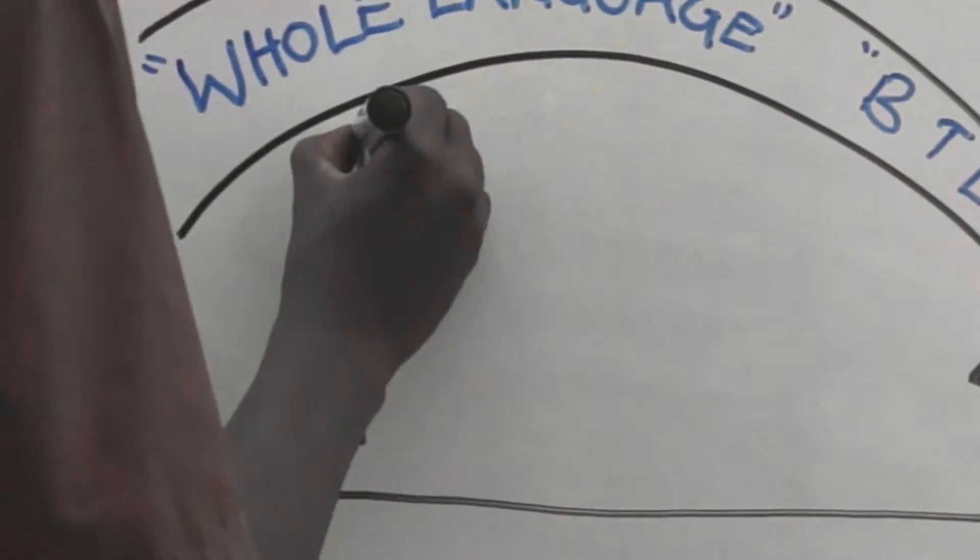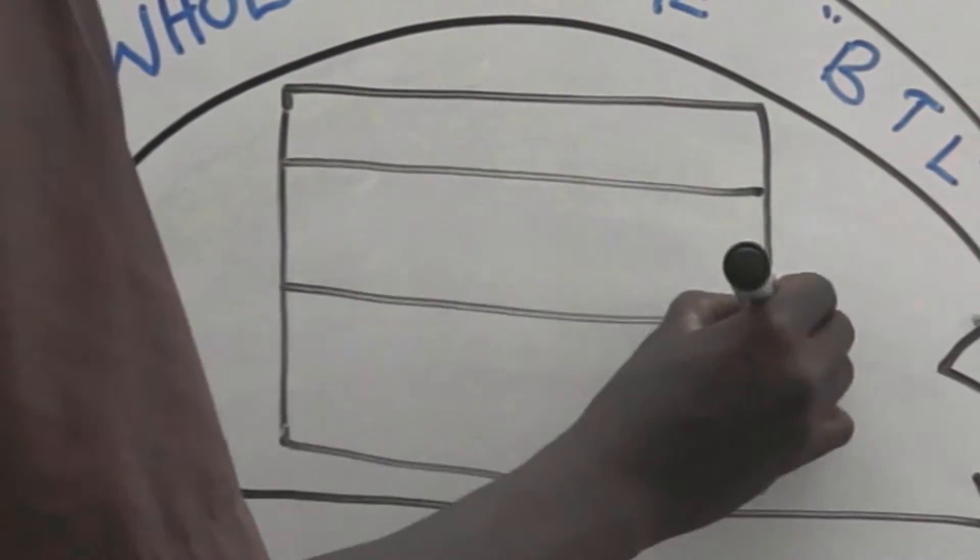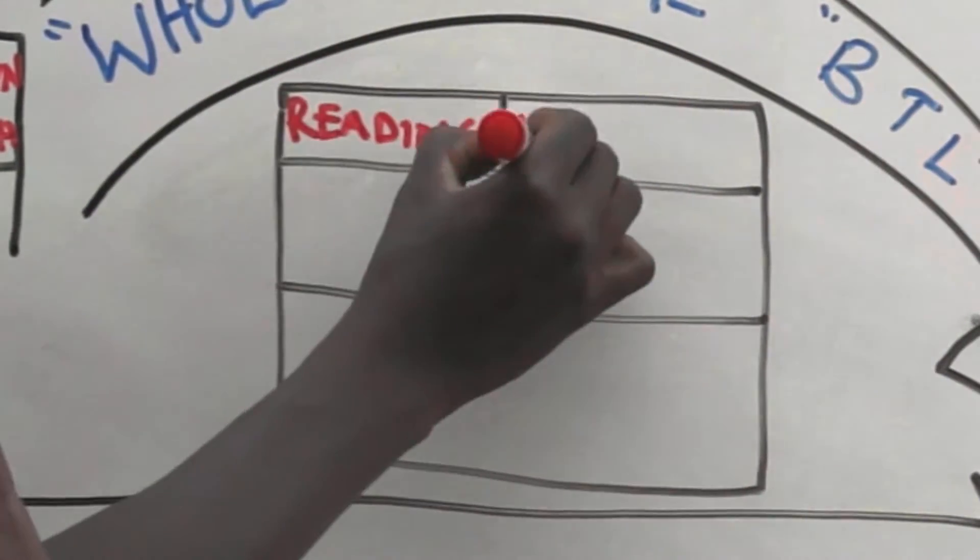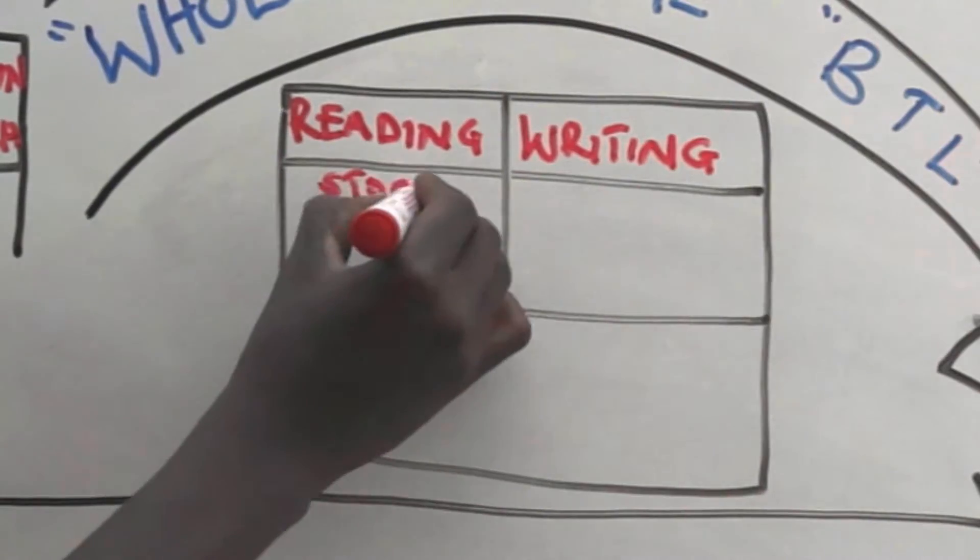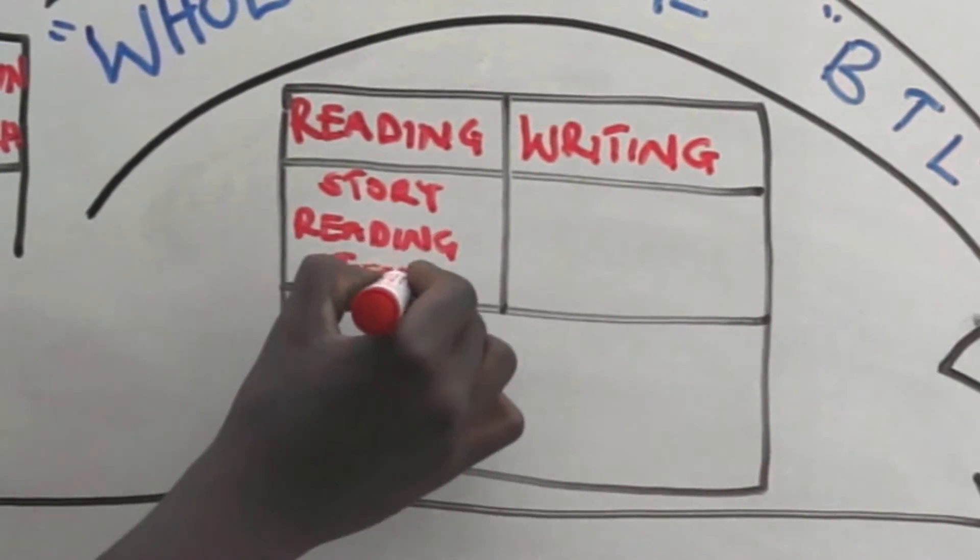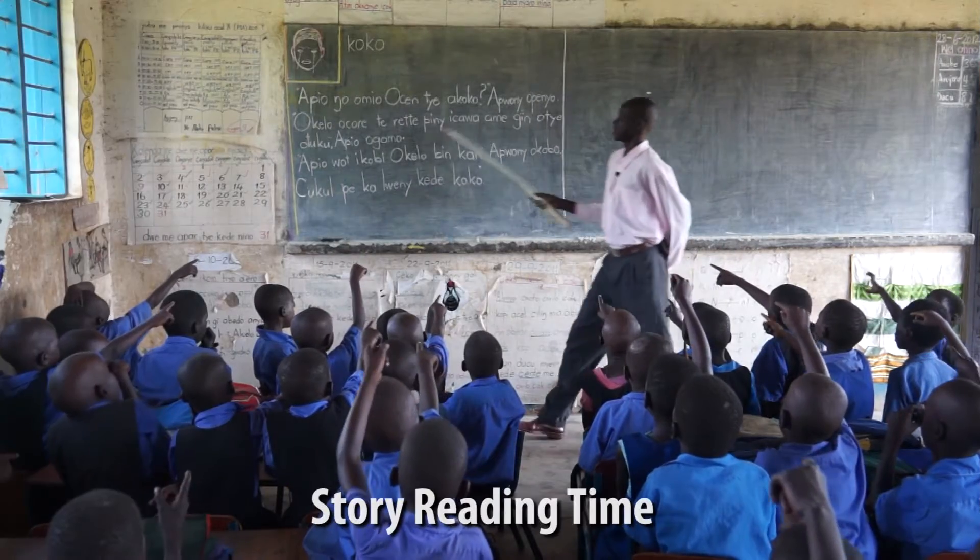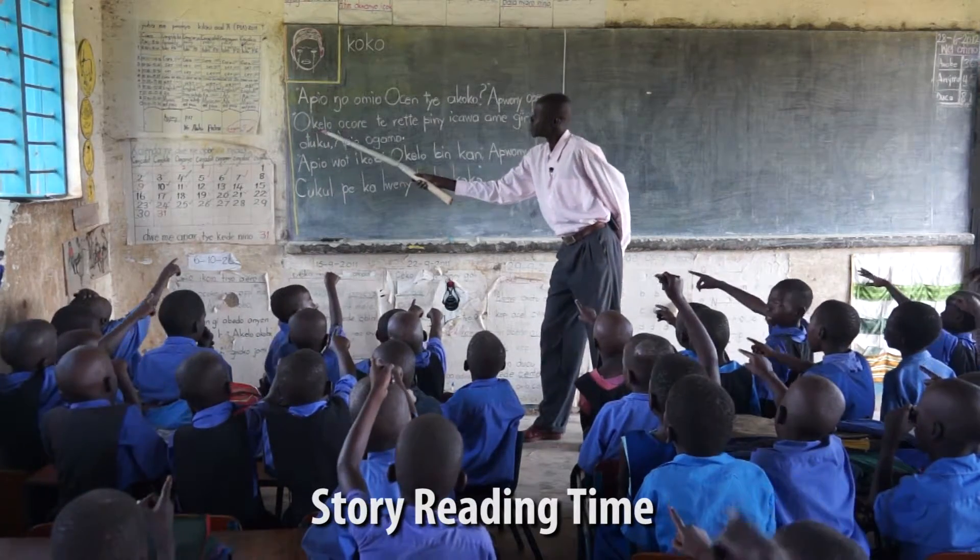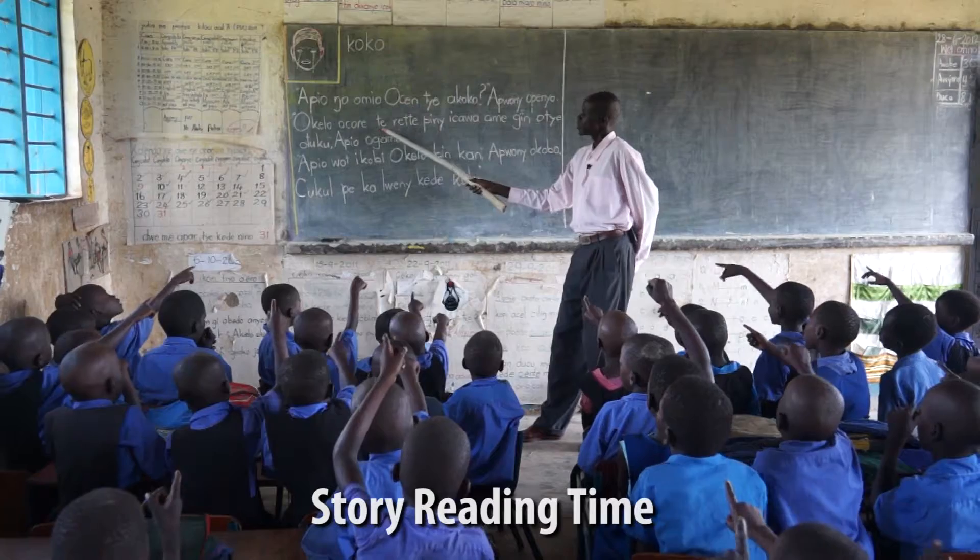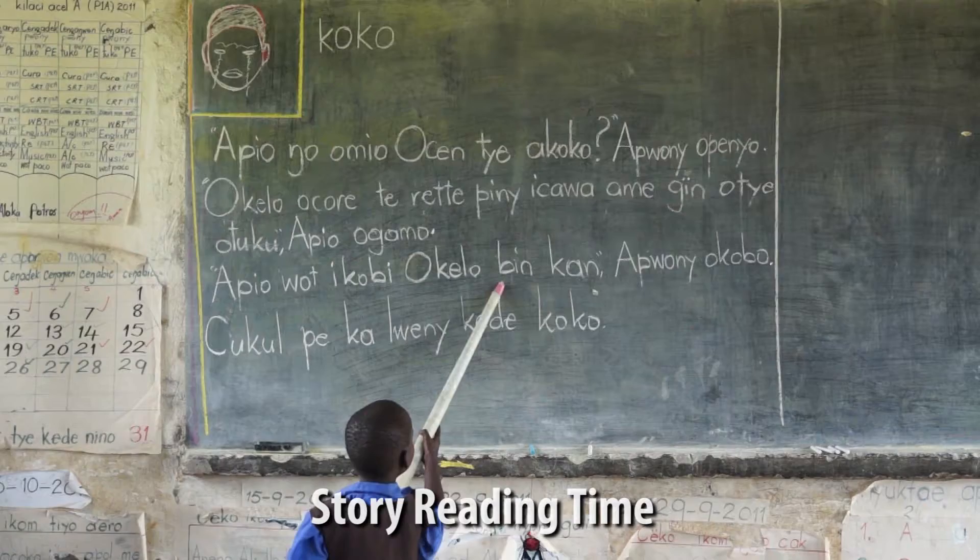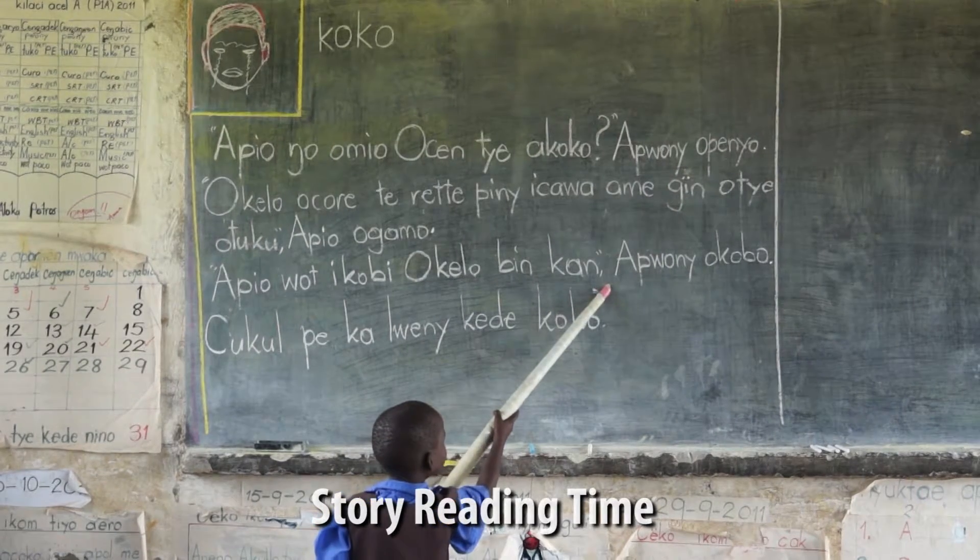Let's look at how our integrated approach gets translated into the classroom every day. We teach reading and writing every day. The first literacy lesson of the day we call story reading time. It is a top-down lesson. The pupils read a story with the teacher. The focus is on reading fluency, vocabulary, and comprehension.